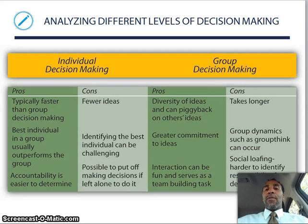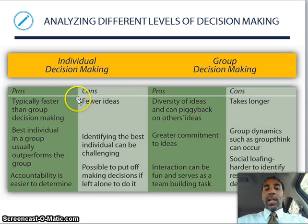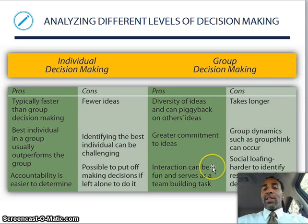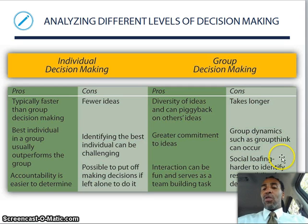Analyzing different levels of decision-making — individual versus group. Individual pros: typically faster, the best individual in the group usually outperforms the group, and accountability is easier to determine. Individual cons: fewer ideas, identifying the best individual can be challenging, and possible to put off making decisions if left alone. Group pros: diversity of ideas, can piggyback on other ideas, greater commitment, and interaction can be fun and serves as a team-building task. Group cons: takes longer, groupthink can occur, social loafing, and it's harder to identify responsibility for decisions.